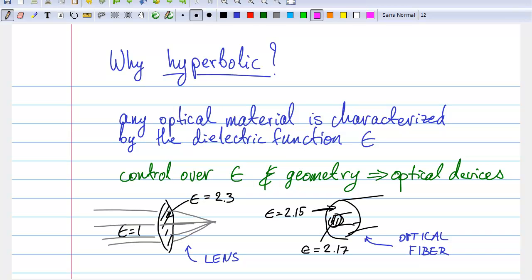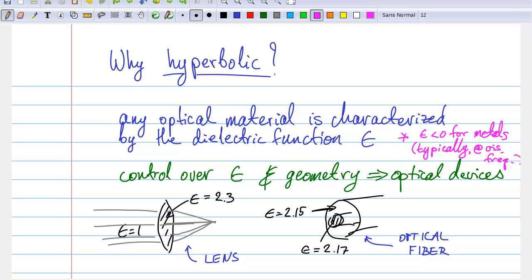For instance, in air, epsilon equals 1, meaning that as light propagates through air, it is not strongly affected. But for metals, epsilon is typically less than zero, as the free electrons rearrange themselves, and try to cancel the field of the incident beam.